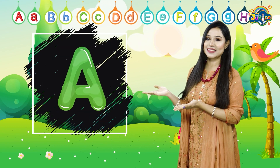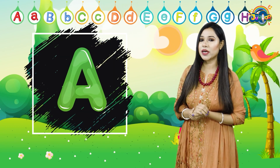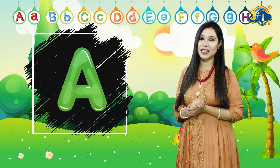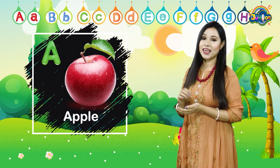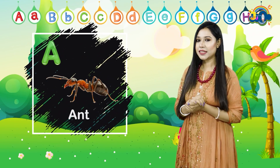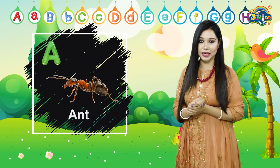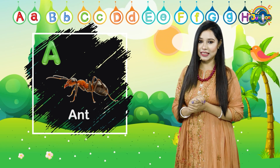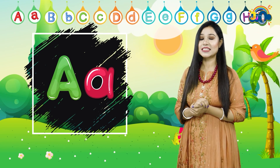At first, let's welcome the letter A. What's the letter? It's A. Can you make words with A? A for apple. A for ant. Can you guess the sound of A? The sound of A is A. What's the sound? It's A.